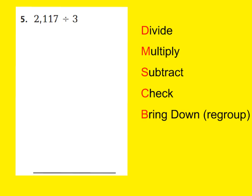Now I want you to rewrite 2,117 divided by 3 like this. We're going to put our dividend, 2,117, inside of our box, and our divisor is 3 — that's how many groups you're dividing 2,117 into. Go ahead and pause the video and try to go through our steps. When you finish, just press the play button again and we'll see if our answers match.